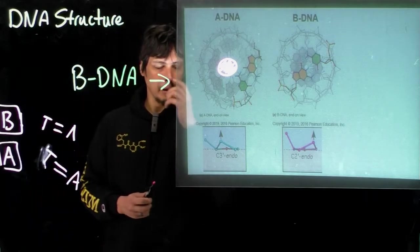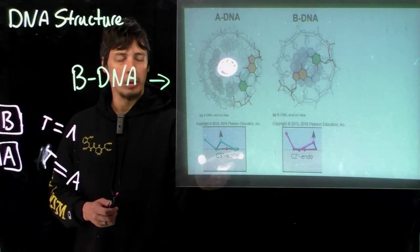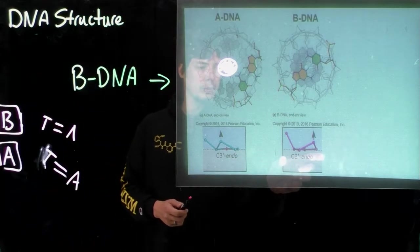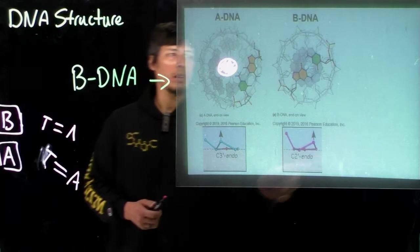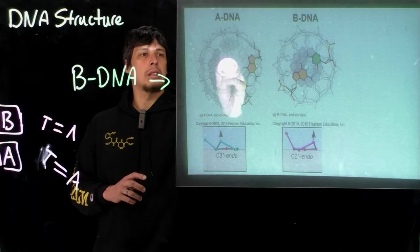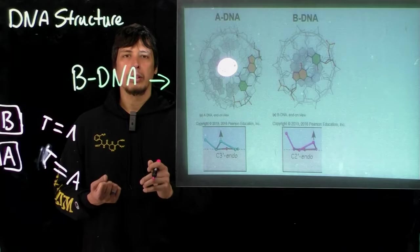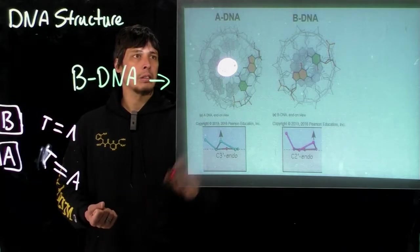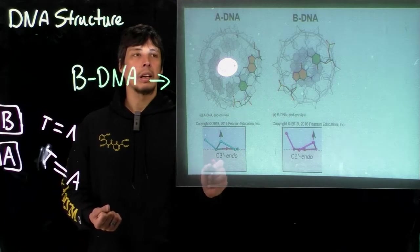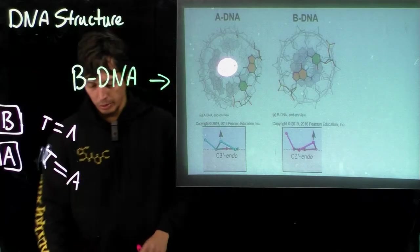So for A-DNA, the ribose rings are all in, or a majority are in, the C3' endo form, whereas for B-DNA, they're mostly in the C2' endo form. And so that is this little minor difference in the structure of the component nucleotides that causes these huge changes in the macromolecular structure of DNA and causes these large changes between the DNA.